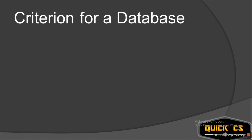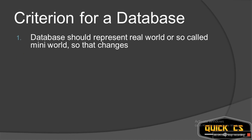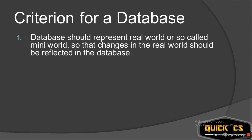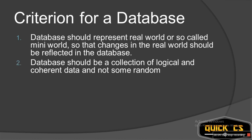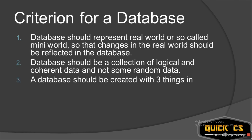The first criteria is that a database should represent a real world or mini world, so that changes that happen in the real world are reflected in the database immediately or as soon as possible, keeping it always updated. The second criteria is that a database should be a collection of logical and coherent data — not some random data. Coherent means the data comes from a single category and exists with a logic, not just any arbitrary facts.